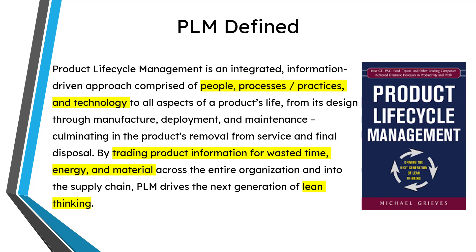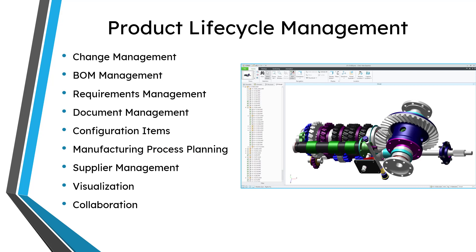Some of the key product lifecycle management functions are listed on the screen. You've got your change management, so you can control changes to data within your enterprise in a closed-loop process. You've got your bills of material, your requirements, your configuration items, and a bunch of other functions including visualization. Visualization enables people across the enterprise to view parts, assemblies, and drawings without having the native authoring application installed on their computers.